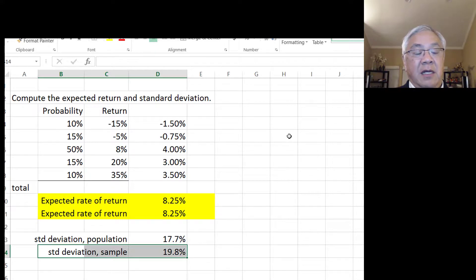In this particular case, these are considered to be known distributions. So we would use the population one, which is 17.7%. All right.